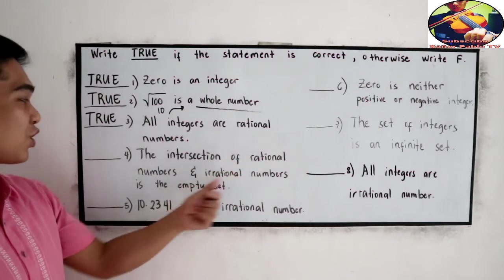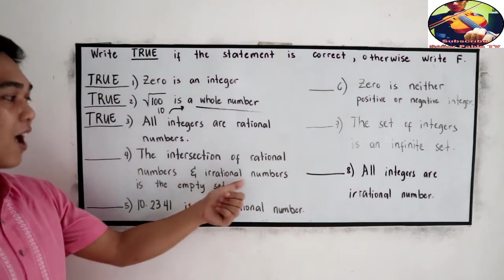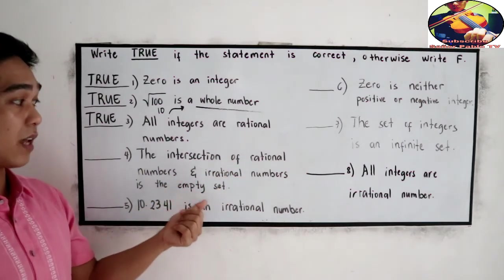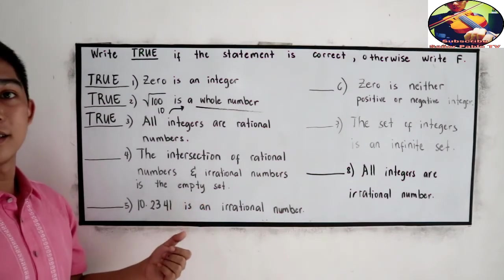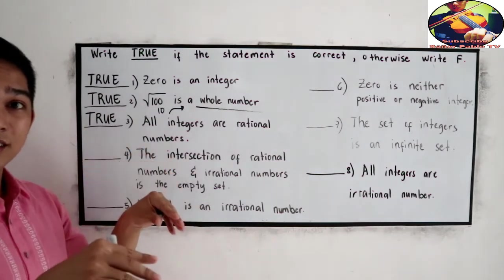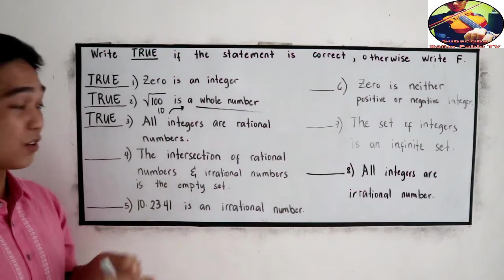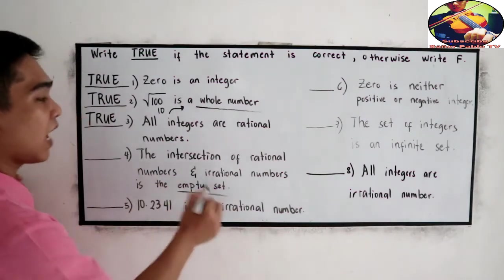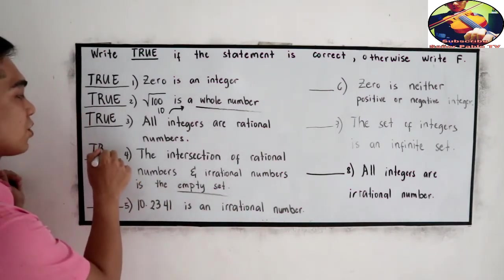Number 4, the intersection of rational numbers and irrational numbers is the empty set. Do we have intersection? We don't have intersection. That means it is an empty set. Also, true.